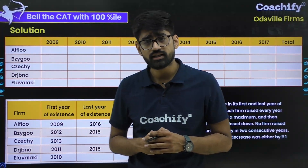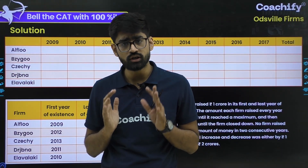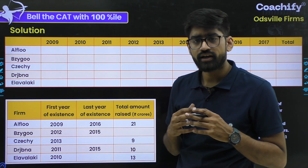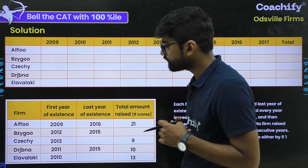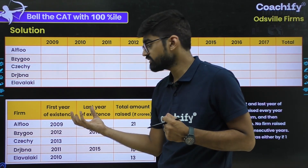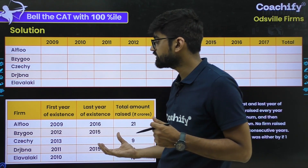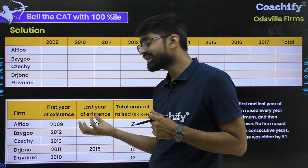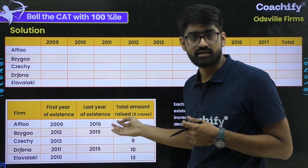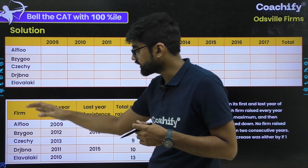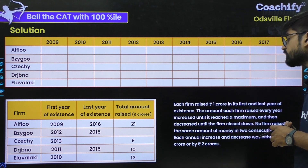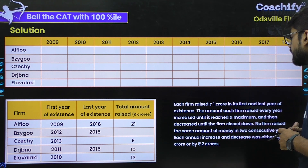Let me quickly explain this set. We have five firms of Oddsville — treat them as A, B, C, D and E. For these firms, we are provided some data in a table showing the first year of their existence and the last year of their existence. For example, firm A started operations in 2009 and wound up operations by 2016. Each firm raised 1 CR in its first and last year of existence.